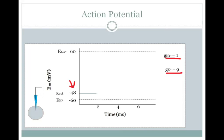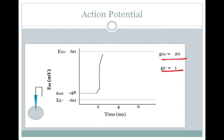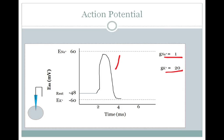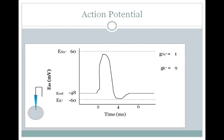If I suddenly opened a bunch of sodium channels — say enough so that the relative conductance of sodium is now 20 versus 1 for potassium — you would start to depolarize the membrane potential towards the equilibrium potential of sodium. If I then closed those channels and opened up a bunch more potassium channels, so the relative conductance for potassium is 20 and for sodium is 1, that membrane potential would start to go down towards the equilibrium potential of potassium, going even more hyperpolarized. If I then closed all those extra potassium channels and we went back to our resting conductances of 9 for potassium and 1 for sodium, you'd be back at resting membrane potential.